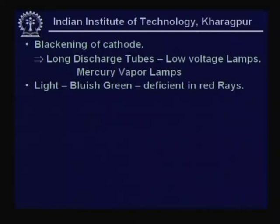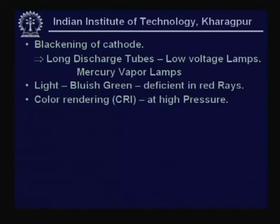The two categories of discharge lamps that are important are mercury and sodium vapor lamps. Mercury vapor has radiation located around the blue region — light due to mercury vapor is bluish green, and it is deficient in red rays, which causes very poor color rendering.